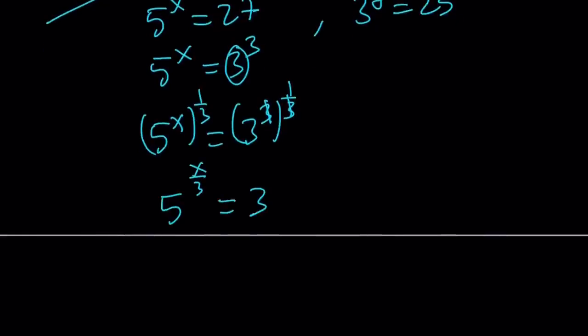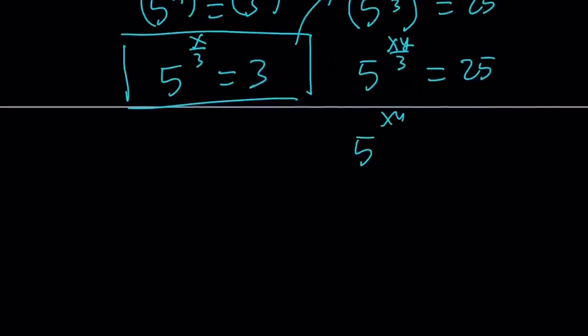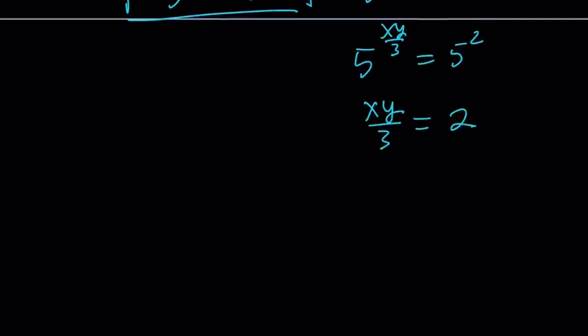So what am I going to do with this? So 3 equals something in terms of x. And I have a 3 here, so I'm going to go ahead and substitute. Let's replace 3 with 5 to the power x over 3. That's going to give me 5 to the power x over 3, instead of the 3, to the power y. That comes from here. Equals 25. Now we're supposed to multiply the exponents. That's going to give us 5 to the power xy over 3 equals 25. 25 can be written as 5 to the second power. And by setting the exponents equal to each other, we get xy over 3 is equal to 2. And finally, xy equals 6, as before.